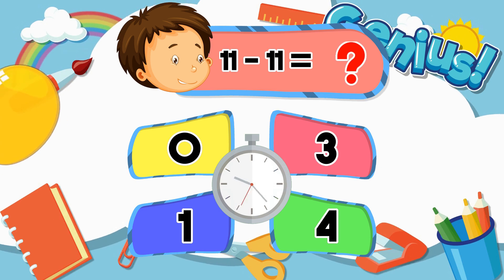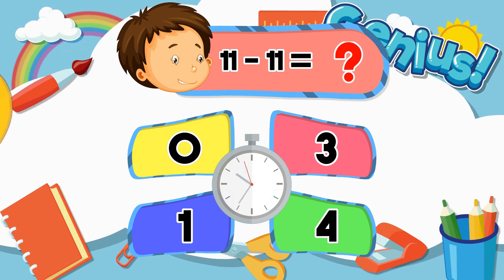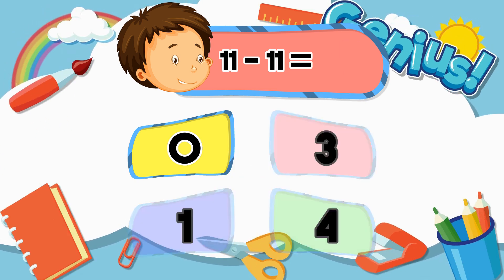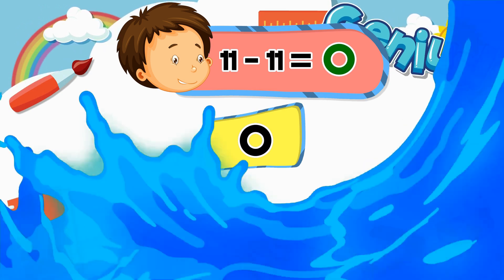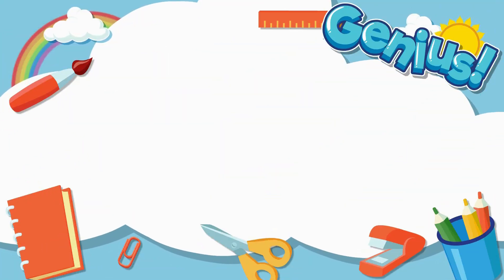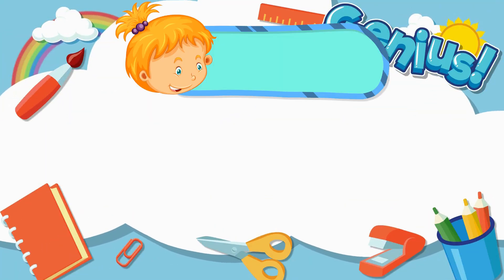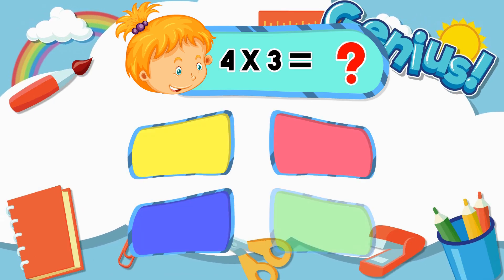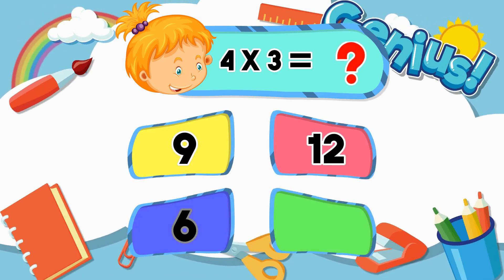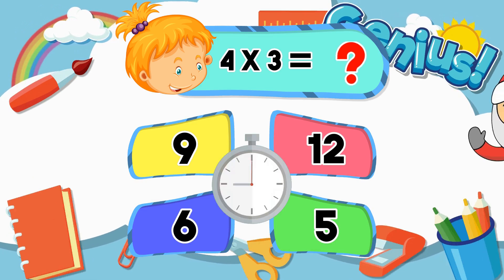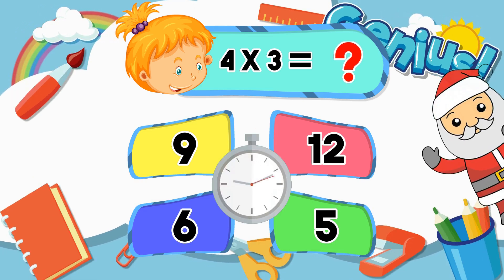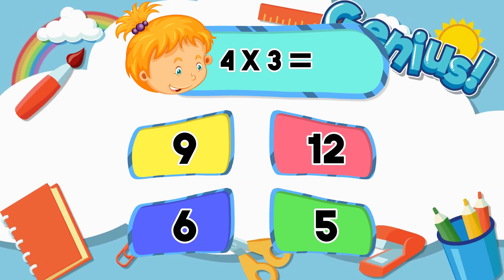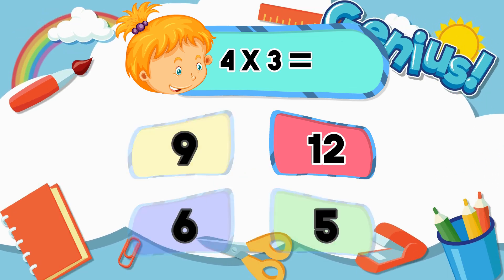What is 11 minus 11? 0, 3, 1, 4. What is 4 times 3? 9, 12, 6, 5. 12.